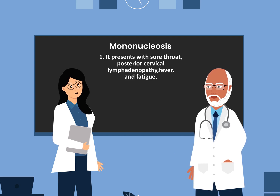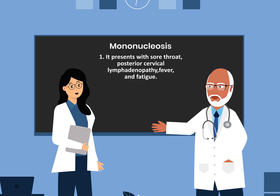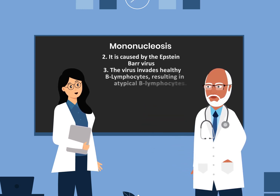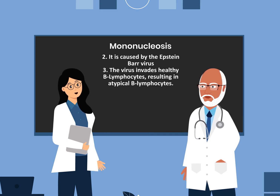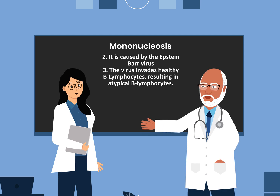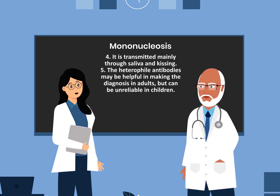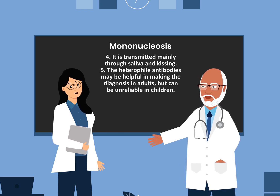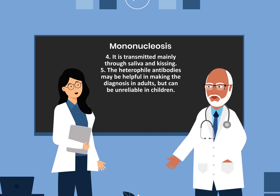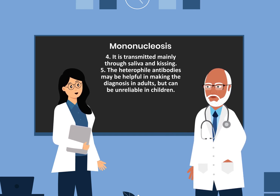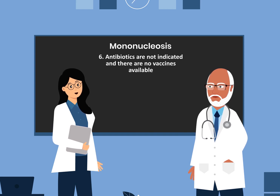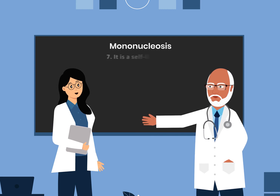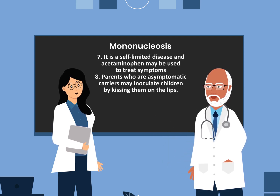In summary: Number one, mononucleosis presents with sore throat, posterior cervical lymphadenopathy, fever, and fatigue. Number two, it is caused by the Epstein-Barr virus. Number three, the virus invades healthy B lymphocytes, resulting in atypical B lymphocytes. Number four, it is transmitted mainly through saliva and kissing. Number five, the heterophile antibodies may be helpful in making the diagnosis in adults but can be unreliable in children. Number six, antibiotics are not indicated and there are no vaccines available. Number seven, it is a self-limited disease and acetaminophen may be used to treat symptoms.